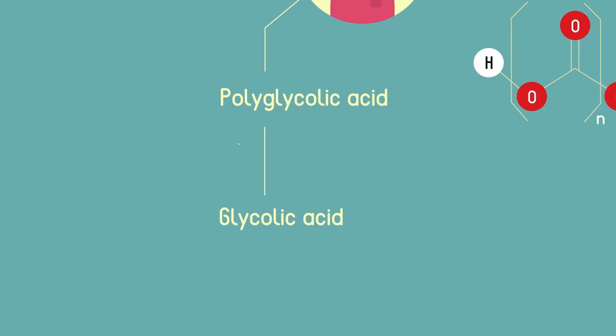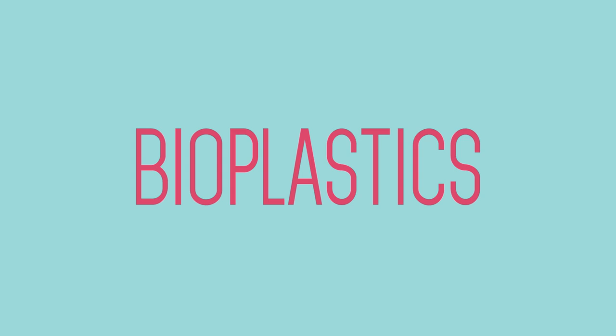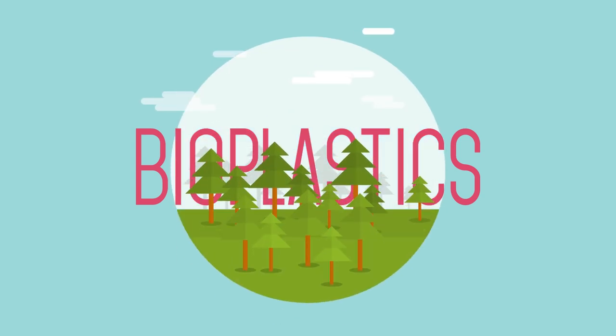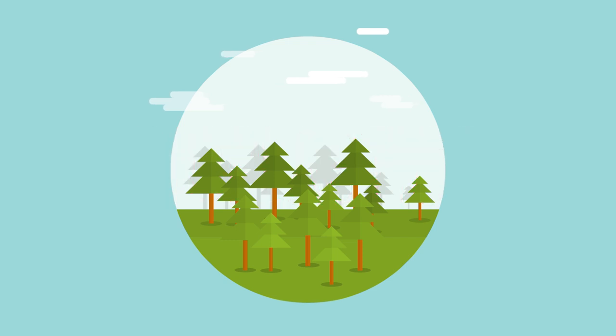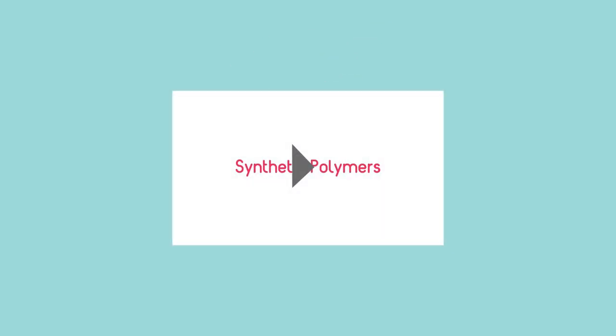There is a new class of plastics known as bioplastics. These polymers are made from natural monomers, such as cellulose and lactic acid, and can be broken down in the environment. For more information on these, please see our synthetic polymers video.